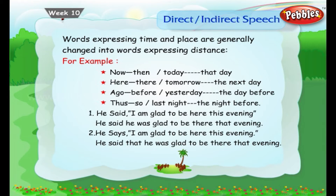He says, 'I am glad to be here this evening.' Indirect: He said that he was glad to be there that evening.